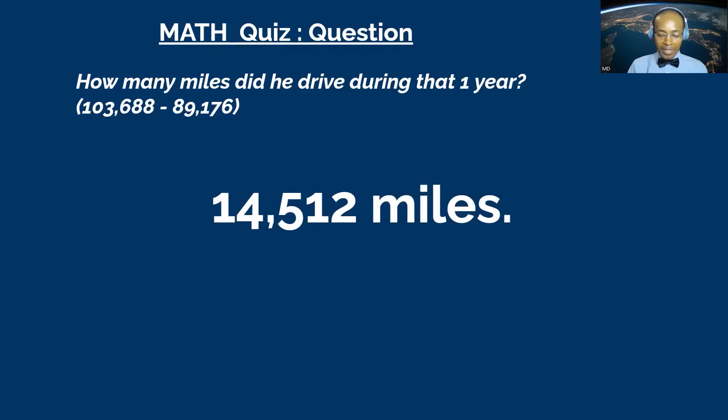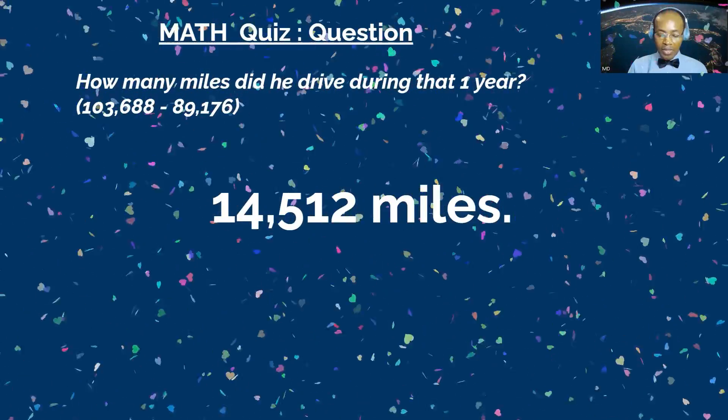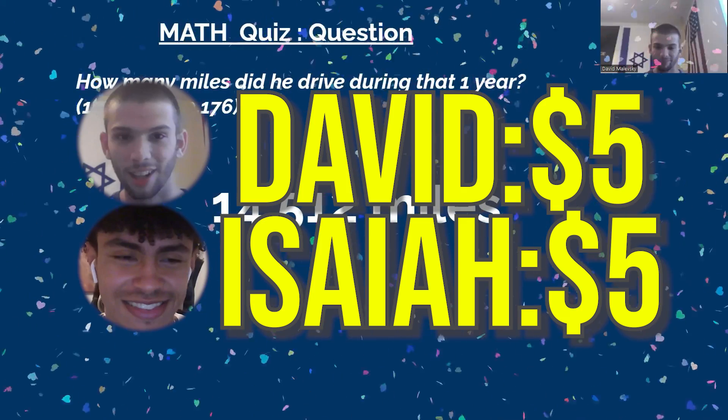Final scores: David has four dollars and Isaiah has five dollars, so a bonus dollar is added for David — they both finish with five dollars each! David can be found on Twitter at 'Big Money Web Three,' where he posts about blockchain and Solidity. Isaiah can also be found on Twitter at @isaiahh116. Thanks for being here and playing Dollar Quiz — hope to see you in the next episode!